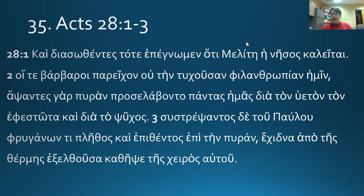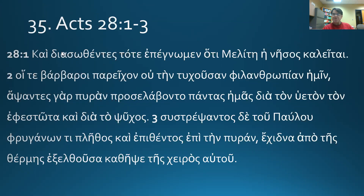So 'Malite' is the Greek for Malta. 'Theta epsilon' — what do you know about theta epsilons? That's an aorist passive. The '-ent' tells me it's an aorist passive participle, and the '-s' tells me it's nominative masculine singular, going with the subject 'we.' So: 'having' (because it's aorist), 'been' (because it's passive), 'rescued' (because it's diasodzo). Having been rescued, we then recognized that the island is called Malta.